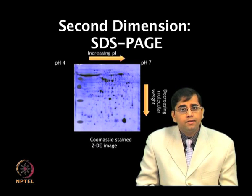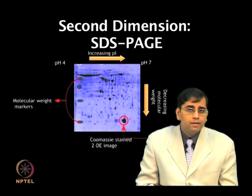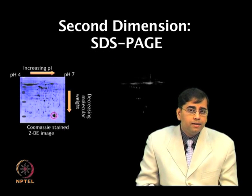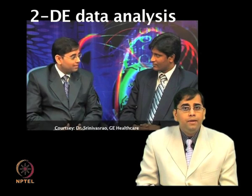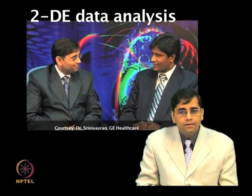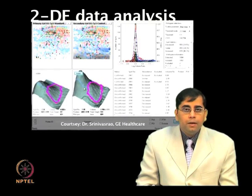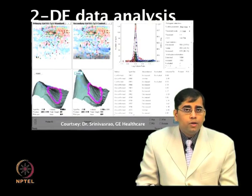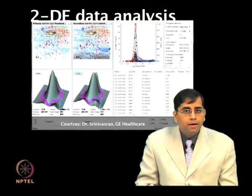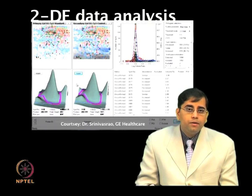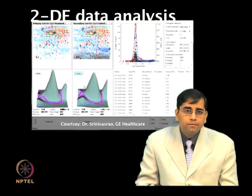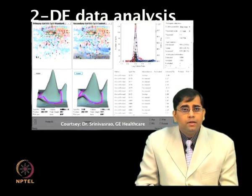Gels can be visualized by different staining methods such as Coomassie staining, silver staining, and cyanine dyes. The gel data analysis will be discussed with an application expert from GE Healthcare. The gel analysis involves image processing, detection of spots, making match sets, landmarking, and viewing histograms. Various information regarding the spots, such as their area, volume, intensity, and statistical parameters such as standard deviations, can also be calculated.